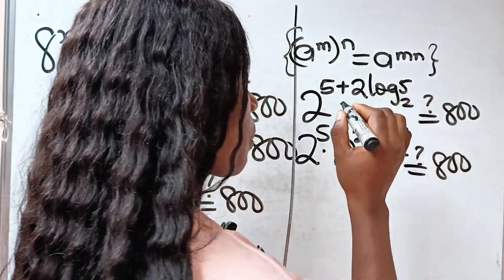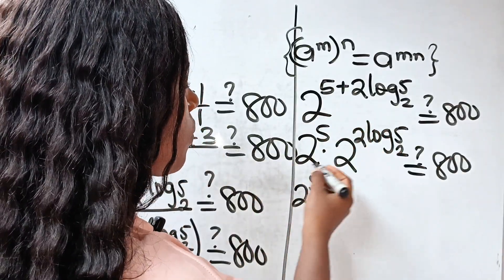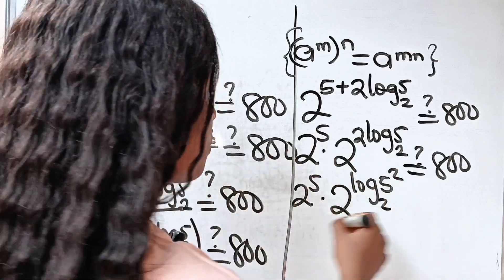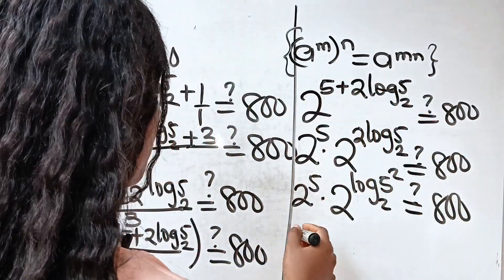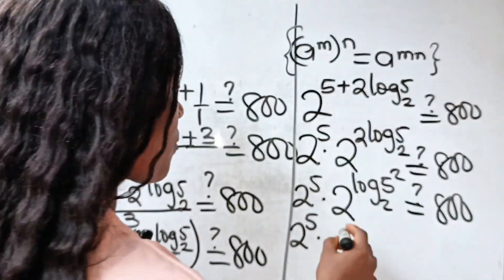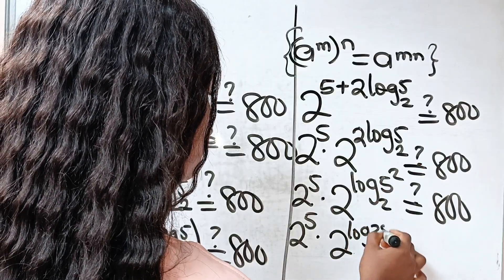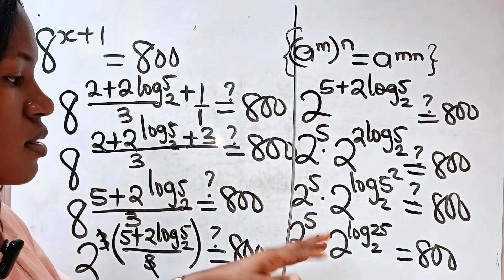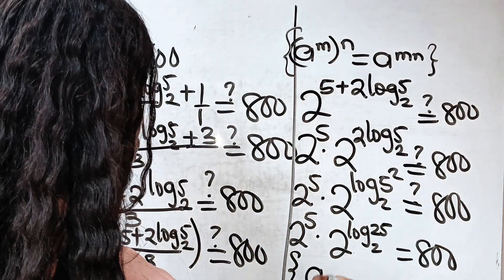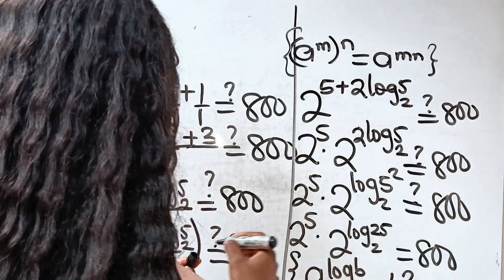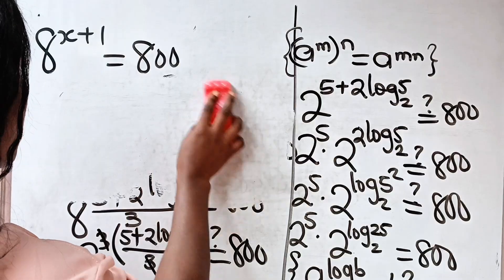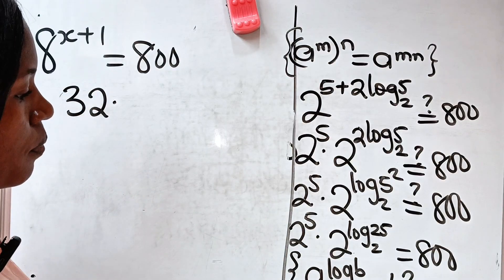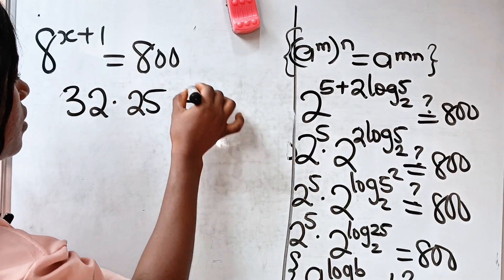So is this equal to 800? We have 2 to the power of 5 multiplied by 2 to the power of 2 log 5 base 2. The 2 becomes the exponent, giving us 2 to the power of log 5 squared base 2, which is log 25 base 2. Now recall that a to the power of log b base a is equal to b. So this becomes 25. Therefore we have 2 to the power of 5, which is 32, multiplied by 25. Is this equal to 800?